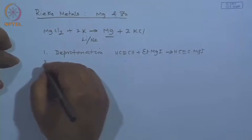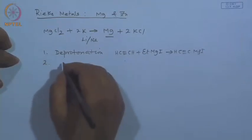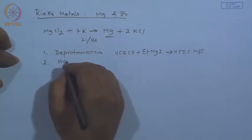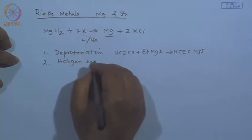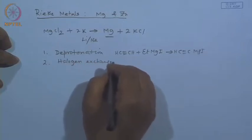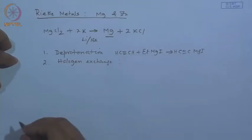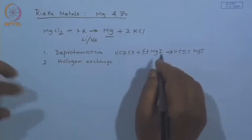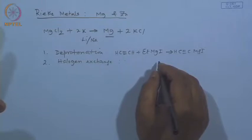The next important thing is halogen exchange. The combination has to be right: the organomagnesium that will be produced should be a weaker nucleophile and weaker base, because these organometallics are actually referred to as bases.